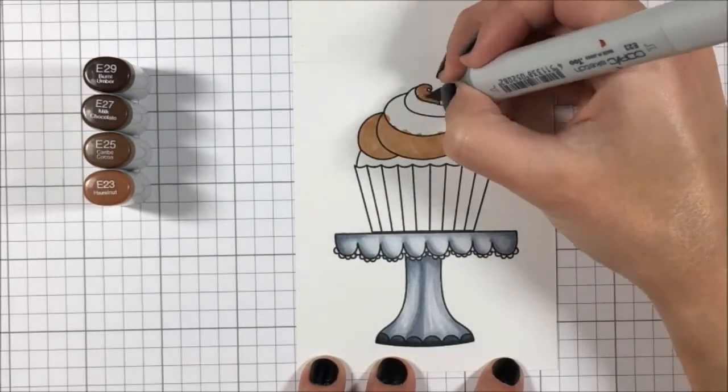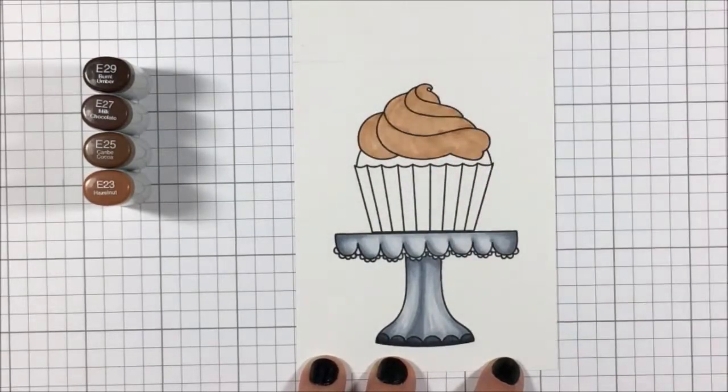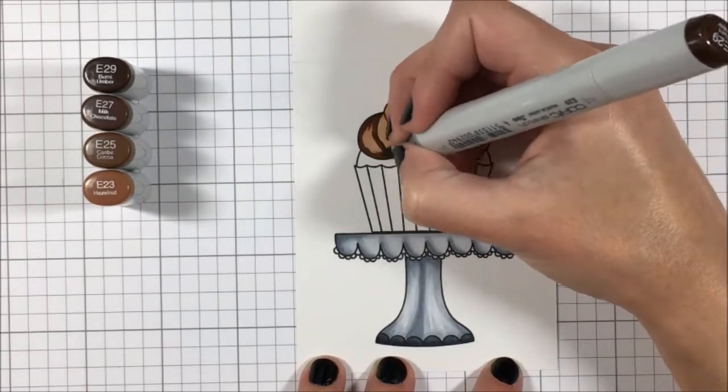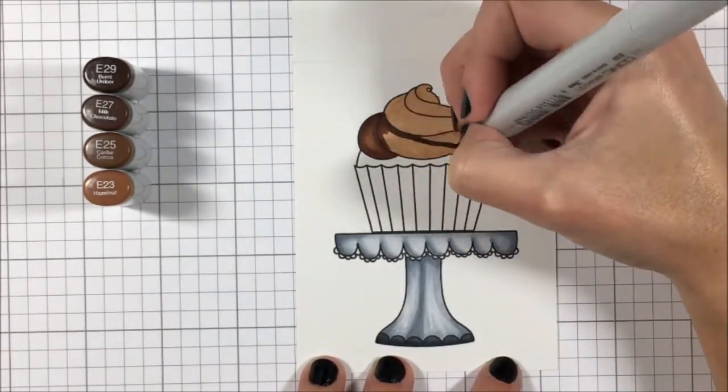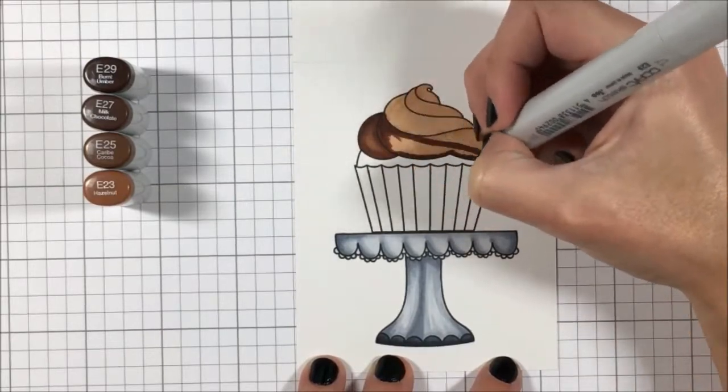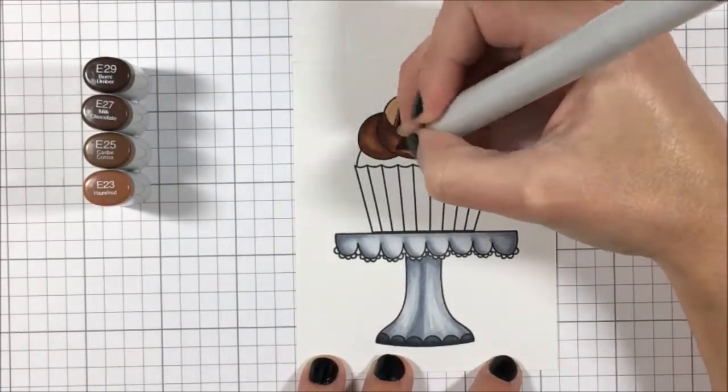I wanted this to be a chocolate cupcake so I came in with several of my E colors. I will admit I got a little heavy-handed but for the most part I tried to leave light spots where I could to give it like that frosting sort of look.